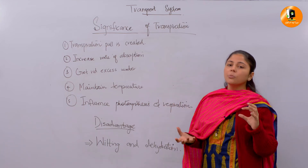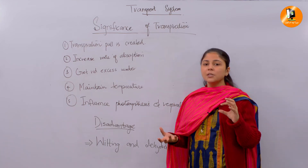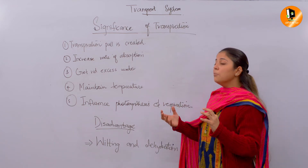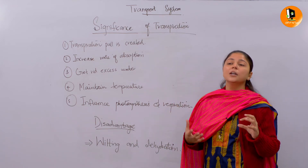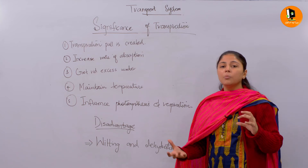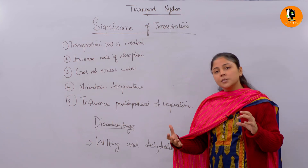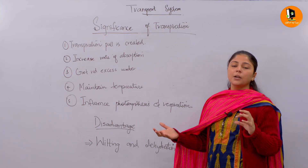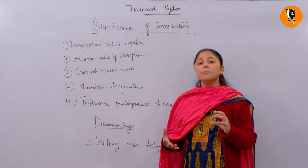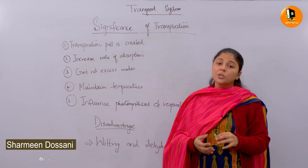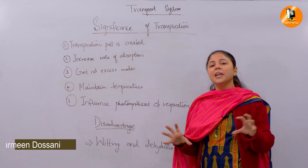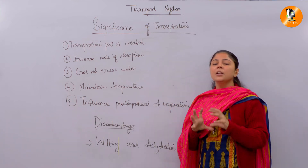More absorption also influences other metabolic rates in the plant. It will allow more photosynthesis and more respiration to occur. So transpiration somehow maintains the overall internal environment of the plant.